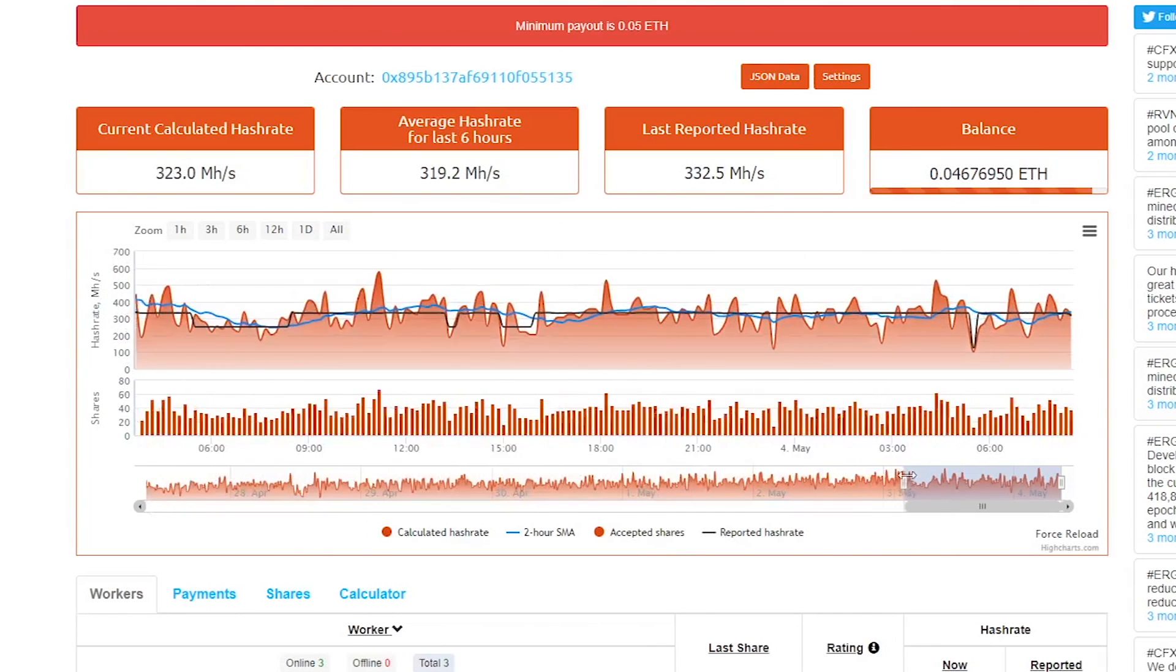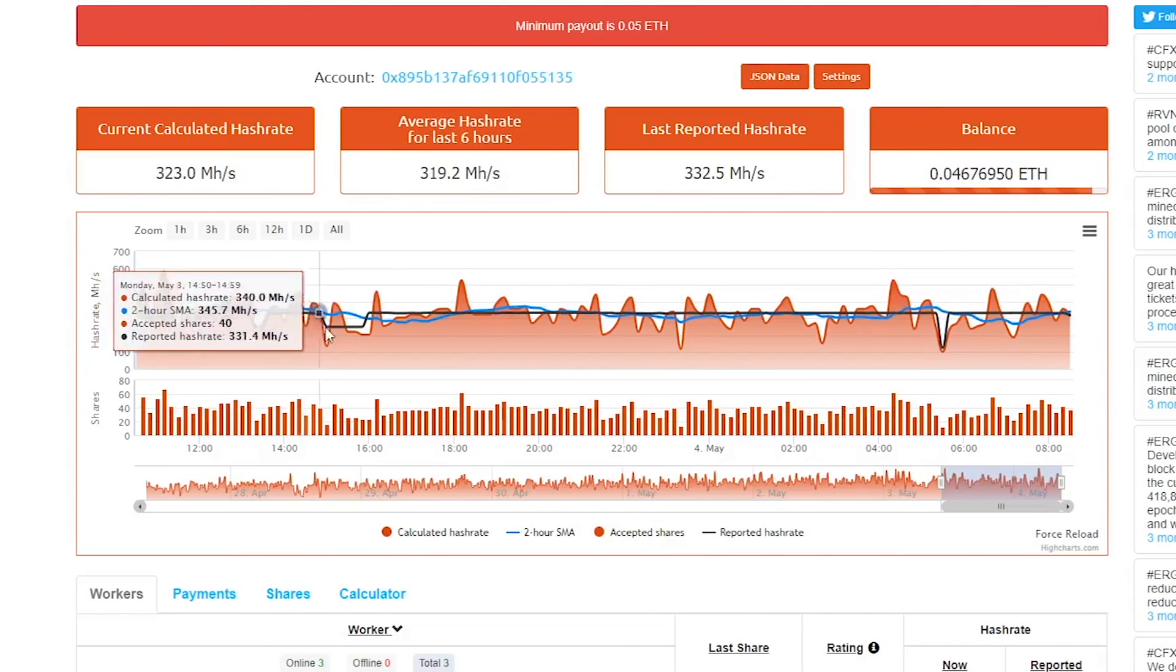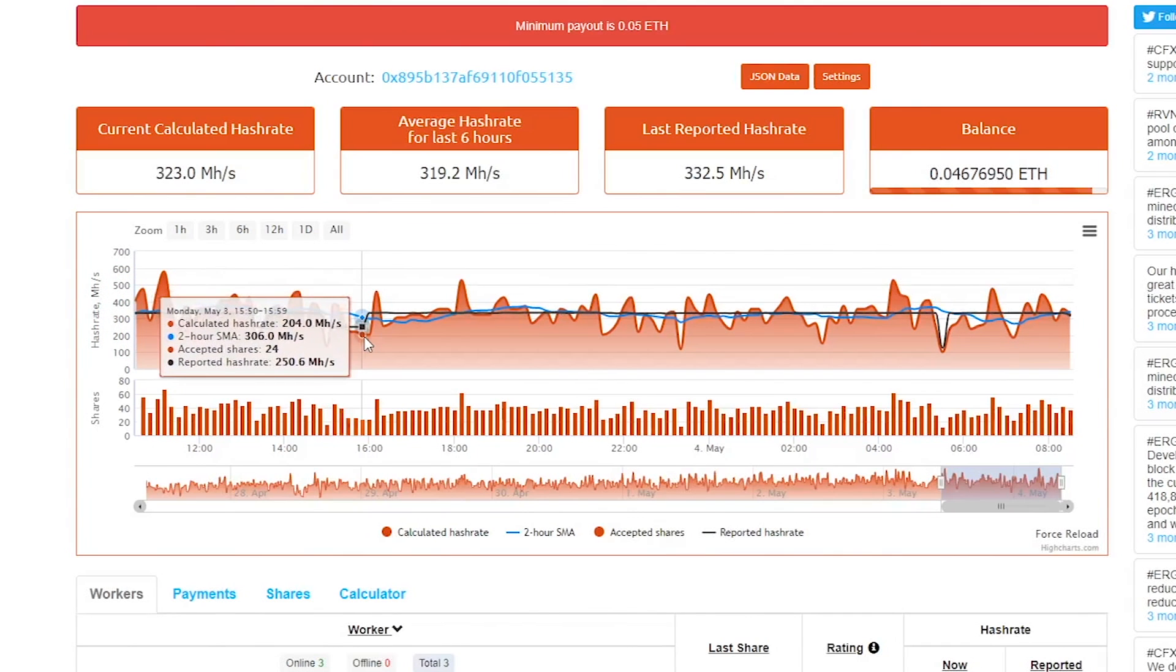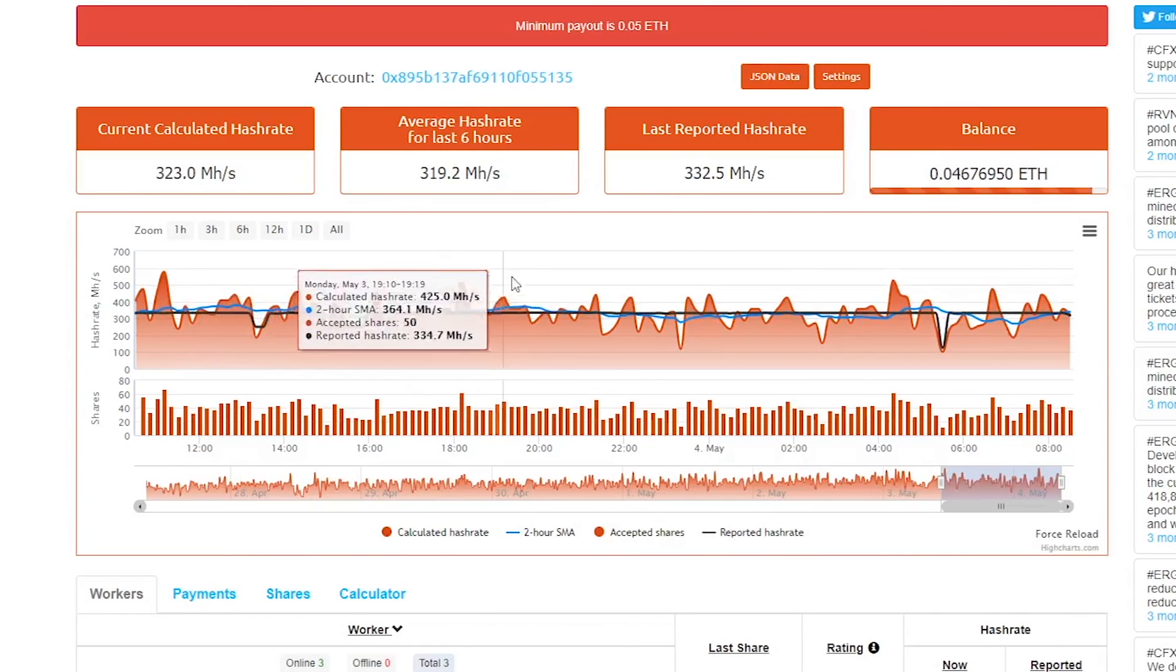So if we zoom in here real quick, you see this orange line right here that goes up and down, up and down. This is like rolling the dice. Well this minute I rolled way more than I actually had, and then the next minute, as it's lower than the black line, I actually mined less than I should have. So it goes up and down, up and down.